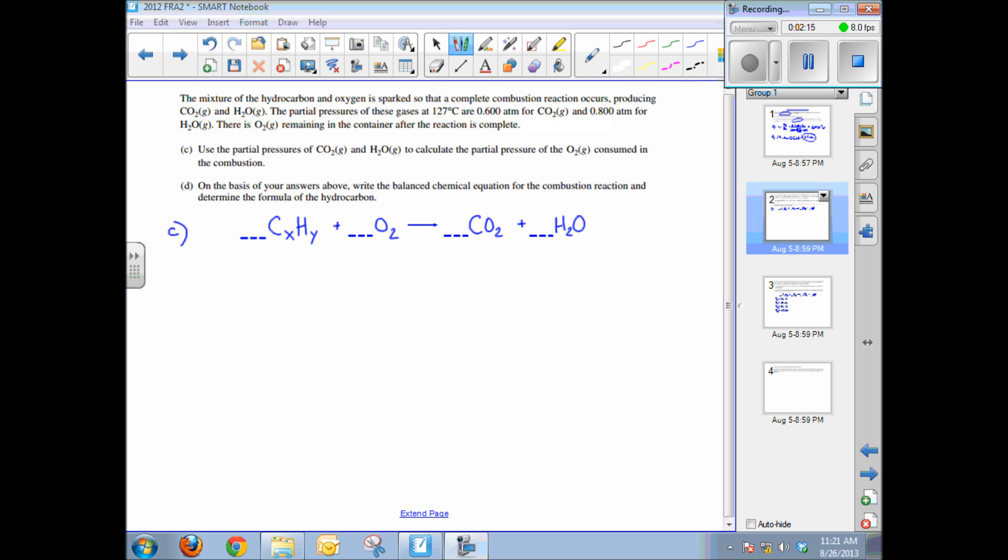So Part C says using the partial pressures of carbon dioxide and water vapor to calculate the partial pressure of oxygen consumed in the combustion. So how much oxygen was consumed? Well remember, in an ideal gas, partial pressures also reflect mole ratios. So we can use the partial pressures of the two product gases, CO2 and H2O, and convert them to atmospheres of oxygen based on the mole ratios that would be required.